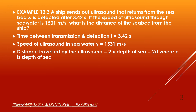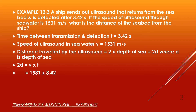Now we apply the formula: 2d = V × t. Substituting the values: 1531 × 3.42. Solving it, we get 5236.